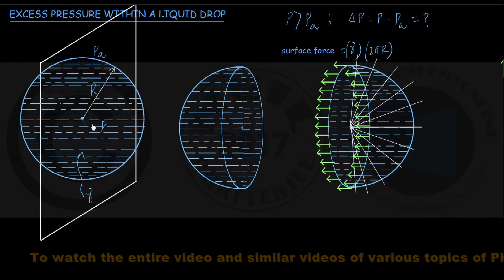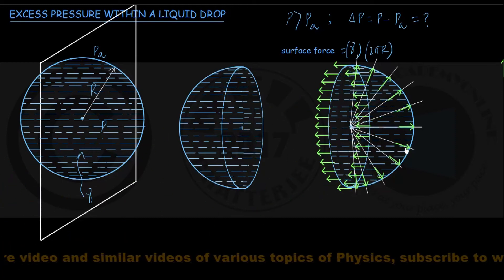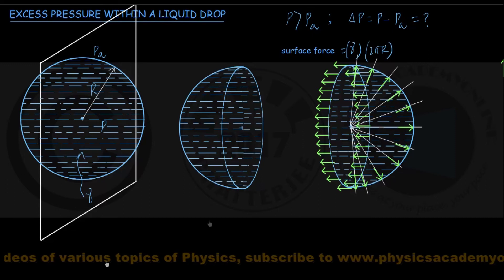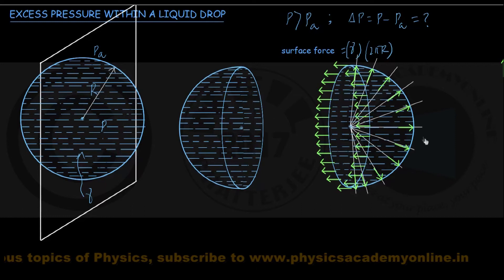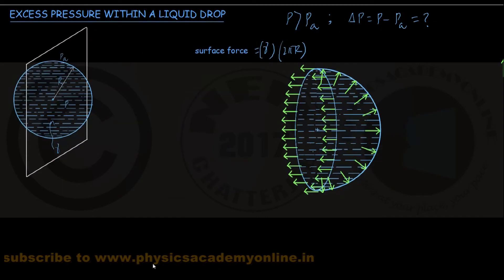To show the pressure force properly, let me first draw a few radial lines, all starting from the center of this hemisphere, pointing radially outward. I plot my force arrows on these radial lines, all pointing outwards and acting on this hemispherical surface.